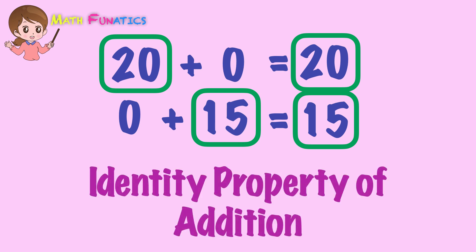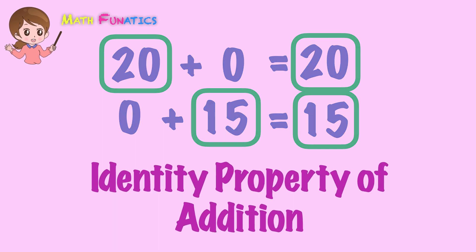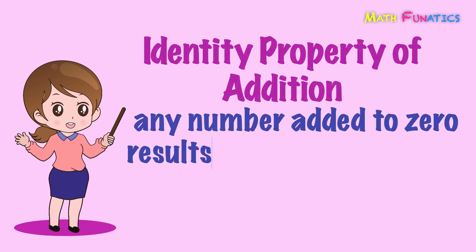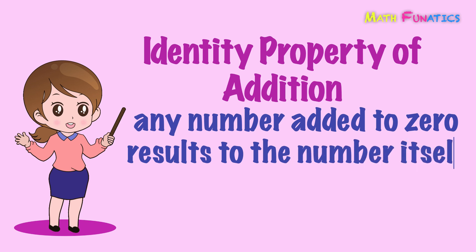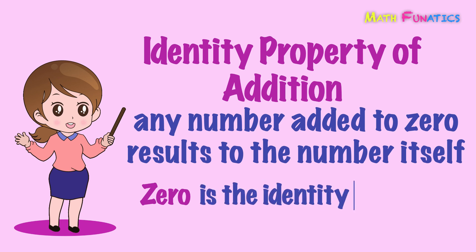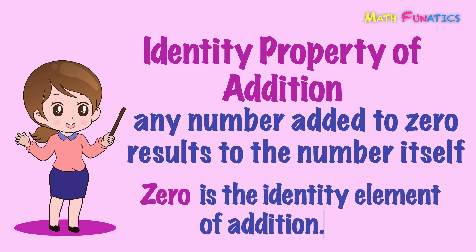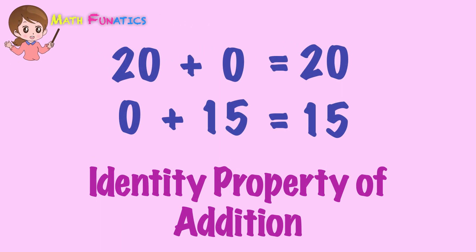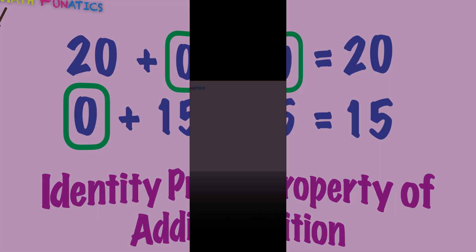These show the identity property of addition. Identity property of addition states that any number added to 0 results in the number itself. As shown in this property, 0 is the identity element of addition. These examples show identity property of addition, where 0 is seen as the identity element.